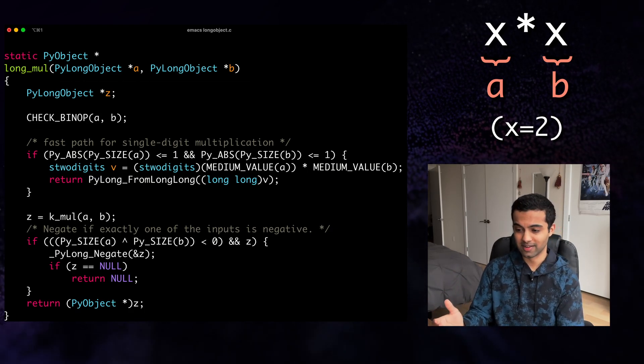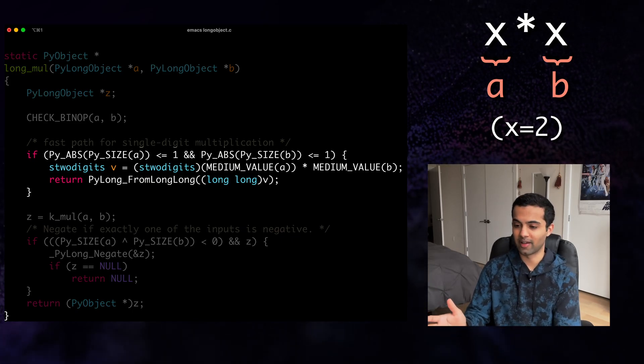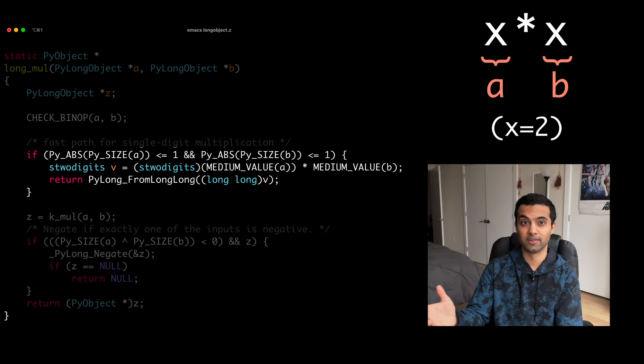And since we're multiplying single digit integers, it also takes a special code path that multiplies the integer values directly and returns the result in a new Python integer object. This just goes to show that long_mul is a pretty efficient function, so let's look at long_pow.